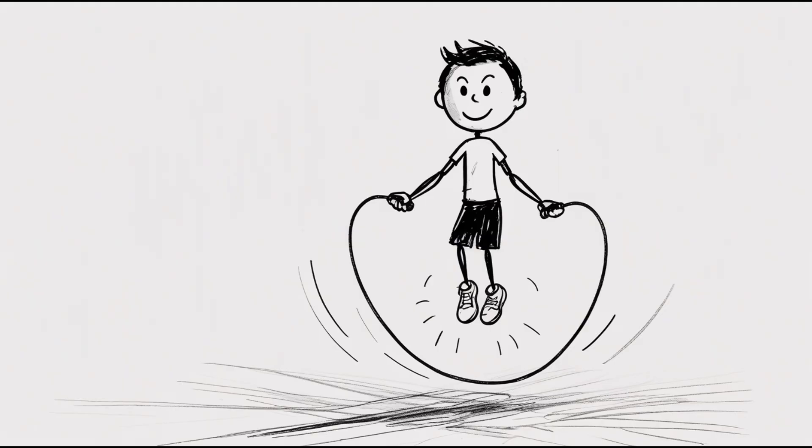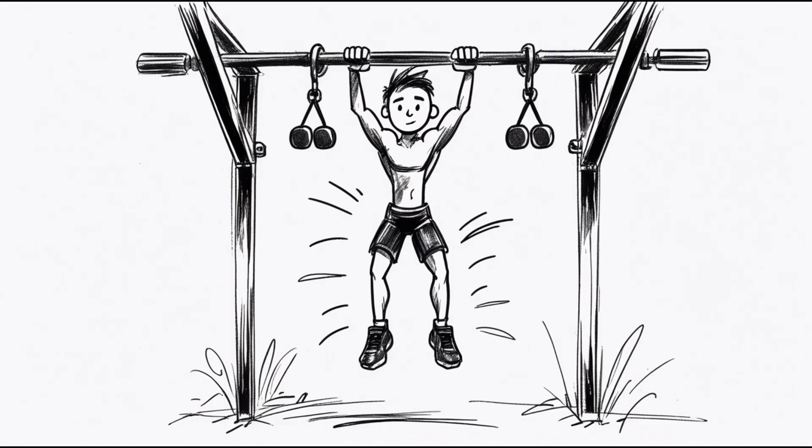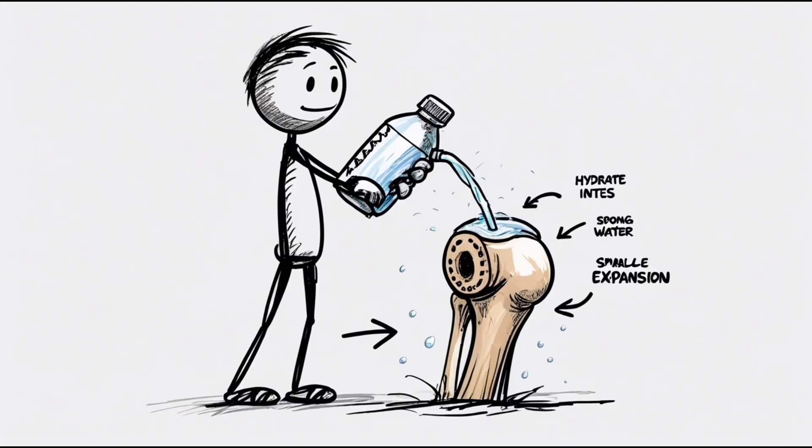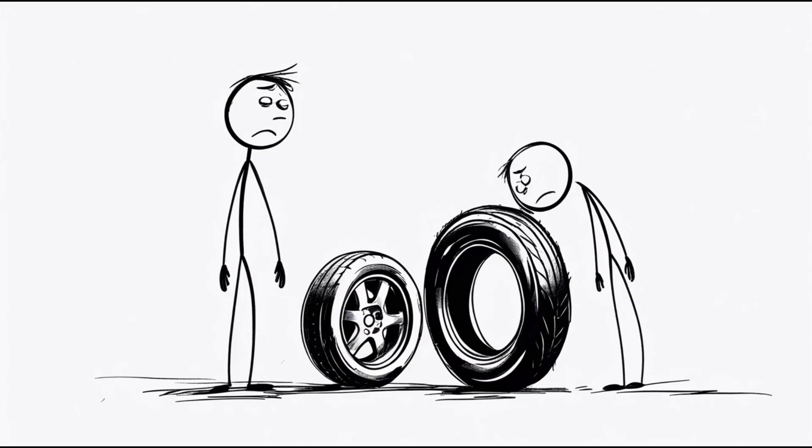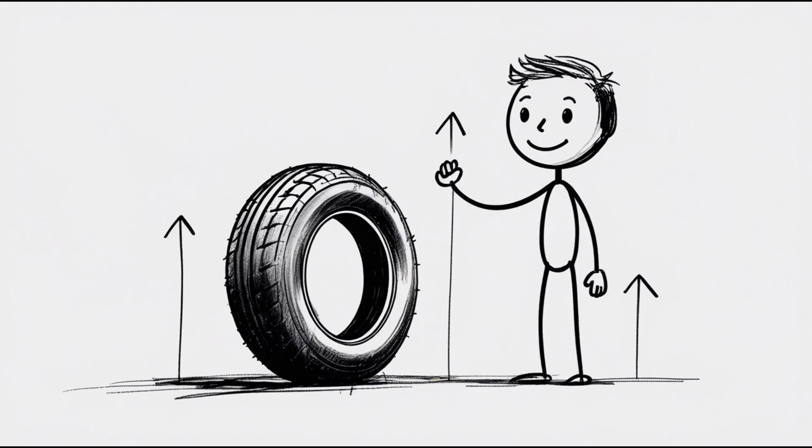The fix. Jump rope daily to stimulate cartilage growth. Do weighted stretches like hanging with ankle weights, but start light. Hydrate like crazy. Cartilage is 80% water and dehydration shrinks it. Think of your joints like tires. If they're flat, you look smaller. Pump them up, and suddenly, you stand taller.